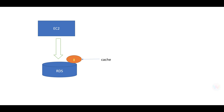How does caching help? All requests coming to the database will first hit the cache. If the data is found in the cache, it will be served from there and the request will not go to the database. If the data is not in the cache, it will hit the database and retrieve the data from there.